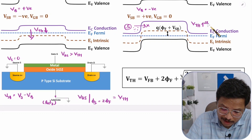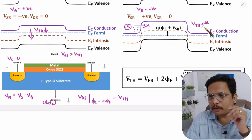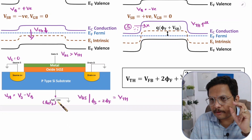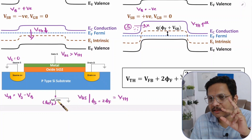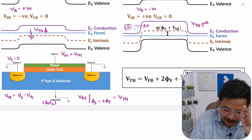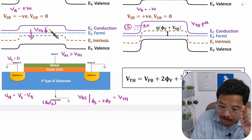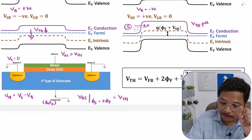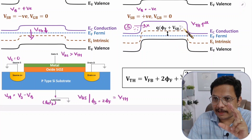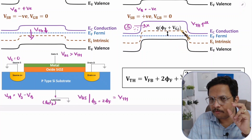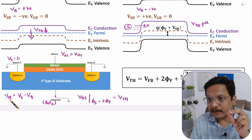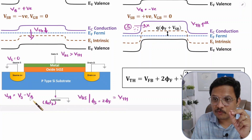By applying some biasing at the body, we are changing the threshold voltage. If you apply positive body voltage, threshold voltage goes down. If you apply negative body voltage, threshold voltage goes up. Practically, this is done through VSB biasing, where VSB equals VS minus VB.